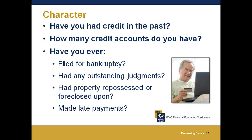Lenders will also ask if you've ever filed for bankruptcy, had outstanding judgments, had property repossessed or foreclosed upon, or made late payments. These situations may make it more difficult to get approved. Situations that might prevent you from getting a loan include an attachment — a lien against personal property — or bankruptcy, a legal declaration of insolvency. Bankruptcy will not fix credit record problems and will be part of your credit history for 10 years. You must get credit counseling before you file for bankruptcy.